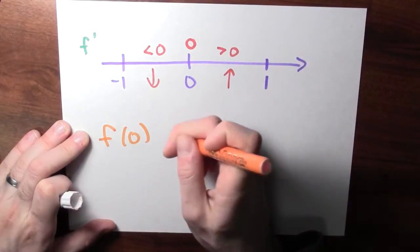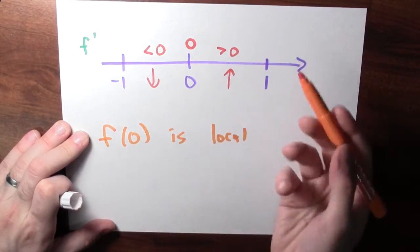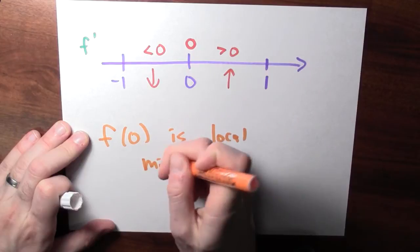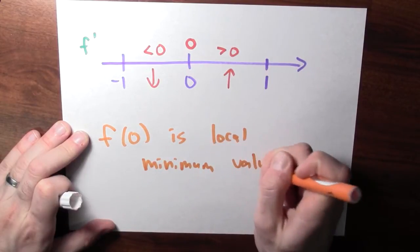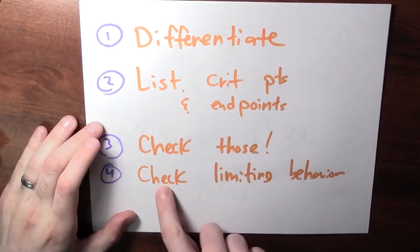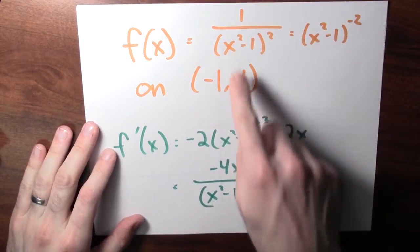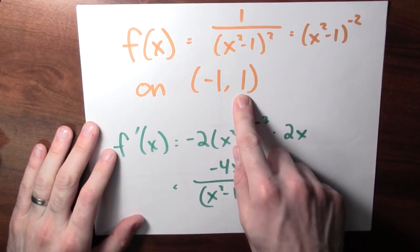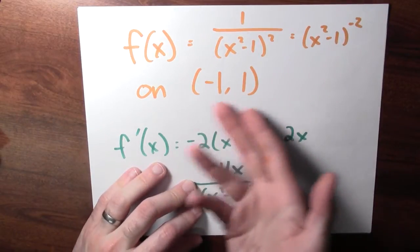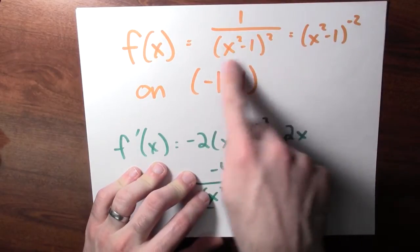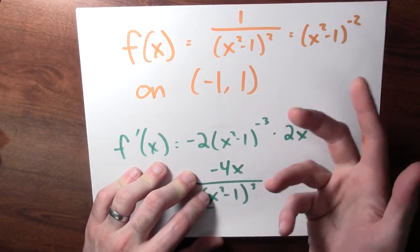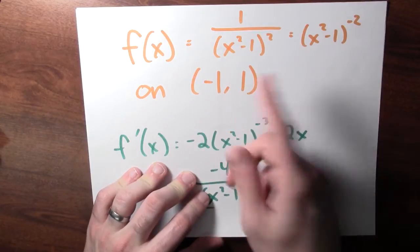By the first derivative test, f of 0 is a local minimum value. Now, what about the end behavior — what happens when x is near minus 1 or near 1? That's step 4: check the limiting behavior. The endpoints aren't actually included in the domain, so I can't evaluate the function there, but I should see what happens when x is close to these endpoints.